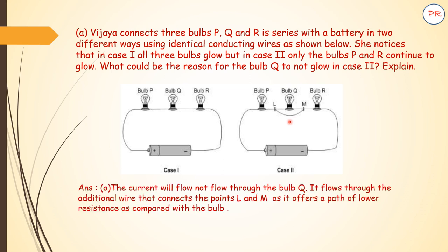We have to write the answer. The current will not flow through bulb Q. It flows through the additional wire that connects points L and M as it offers a path of lower resistance as compared with the bulb. That is why bulb Q will not glow at all. Now let us go for the next question.